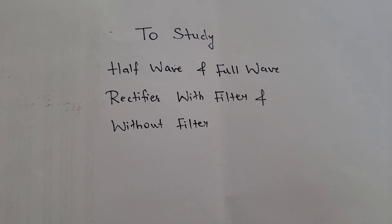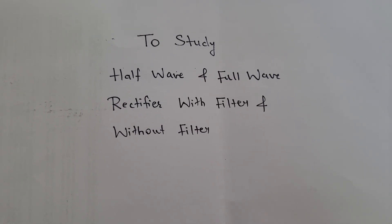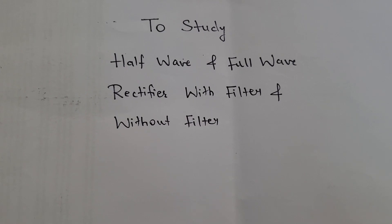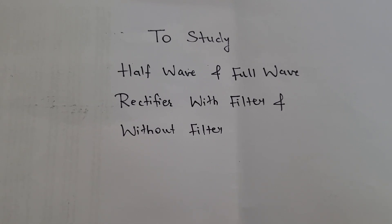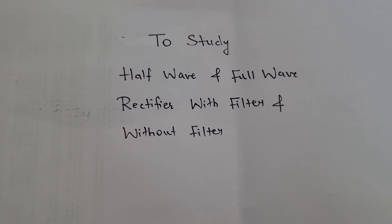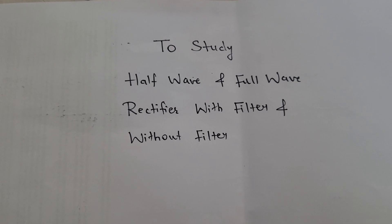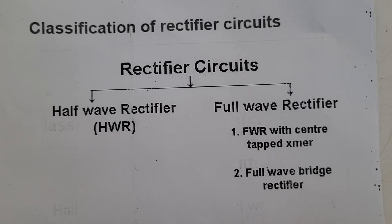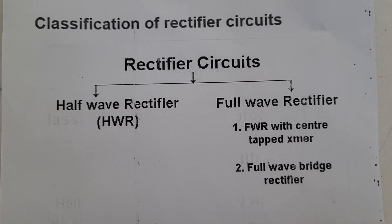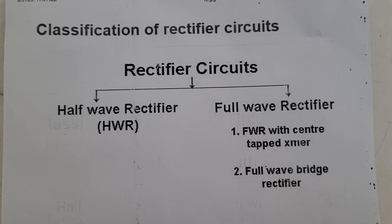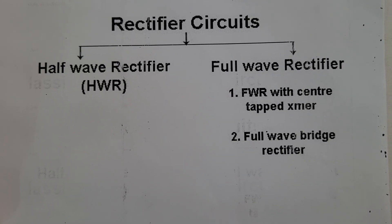Hello students, today we are going to study half wave and full wave rectifier with filter and without filter. First of all, let us know what is a rectifier. It is an electrical device that converts AC to DC by using one or more PN junction diodes. Rectifiers are classified into different types based on the number and arrangement of diodes in the circuit. Rectifier circuits are divided into two: half wave rectifier and full wave rectifier. Full wave rectifiers are further subdivided into full wave rectifier with center tap transformer and full wave bridge rectifier.